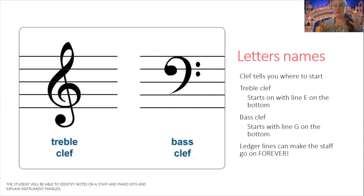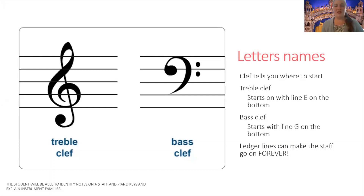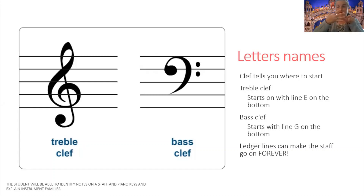Letter names: we use the musical alphabet to name our pitches, and we use the letters A through G — A, B, C, D, E, F, G — and they just repeat on and on to infinity and beyond. The clef tells you what letter name to start on. For the treble clef, the bottom line (line one) is the letter E, and you can go through the alphabet from there: E, then space F, line G, space A, line B, space C, line D, space E, line F. Bass clef same concept but the bottom line starts with G.